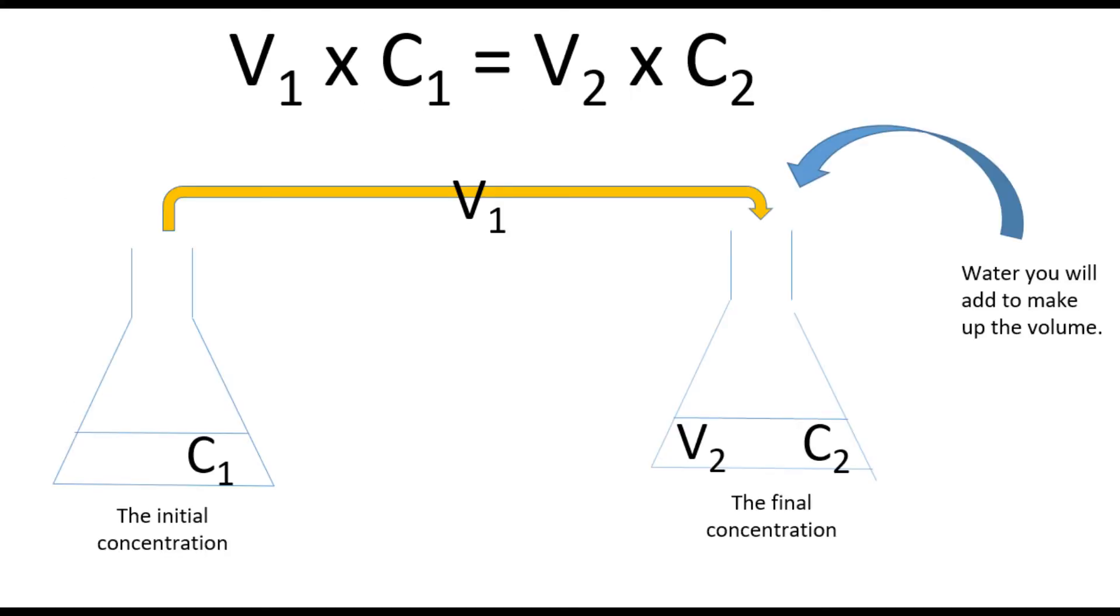So we've learned how to do a dilution series when we've been working with a one-molar solution and we've made five different dilutions from it. That's fairly straightforward. What about when we're not working with a one-molar solution? What about when our stock solution is a 0.8 molar solution?